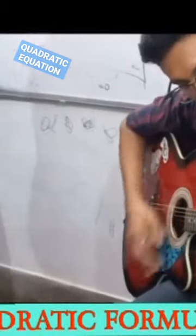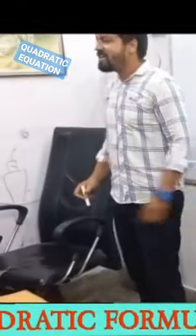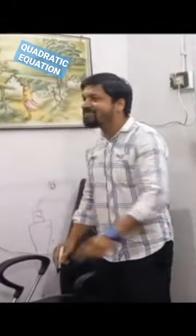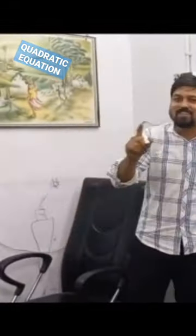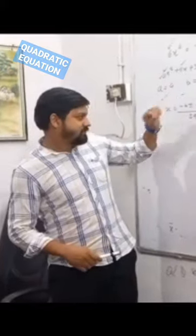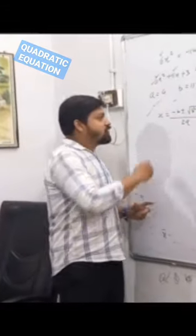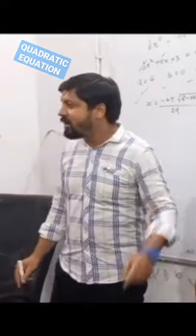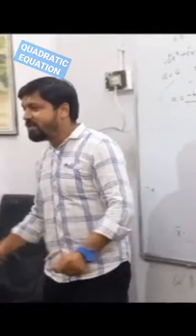And if you get the right formula, you will see — you will get the solution in the very next step. Just sing the song in your head: negative b plus or minus the square root of b squared minus 4ac, over 2a.